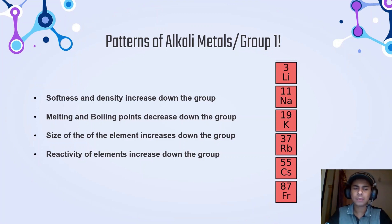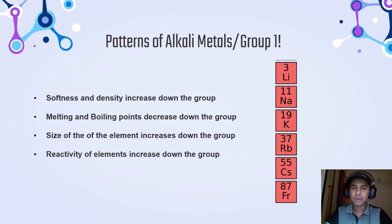You may wonder why reactivity increases as we go down the group. It is because when the size of the elements increases down the group, the number of electron shells increases. As a result, the one valence electron that these metals have gets farther away from the positively charged nucleus at the center. This makes it easier for that one electron to get away from its structure. So as we go down the group, the size increases, the distance between the positively charged nucleus and the valence electron increases, and therefore the valence electron can leave the shell more easily — that is why reactivity increases as we go down the group.